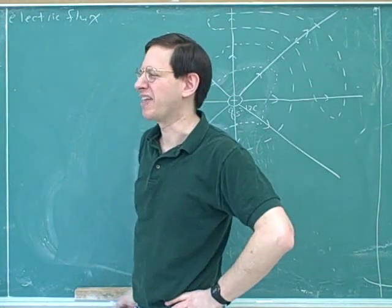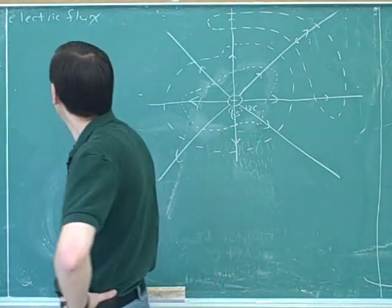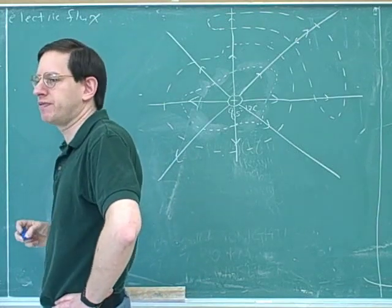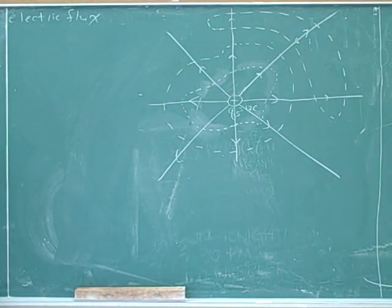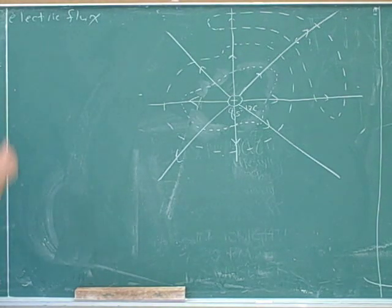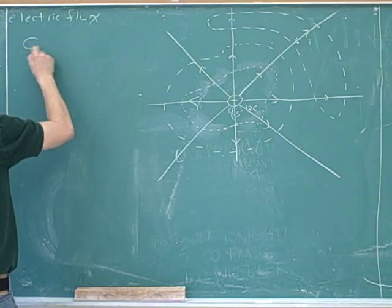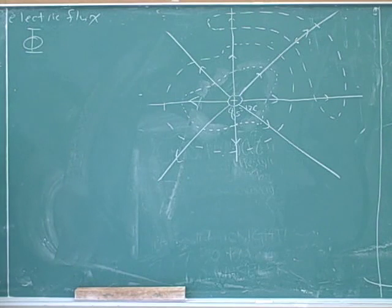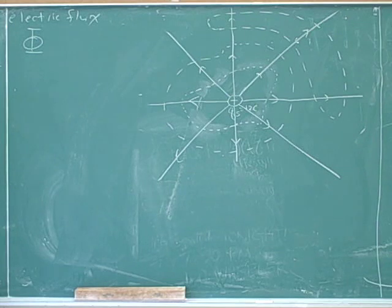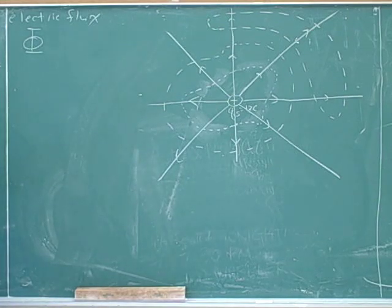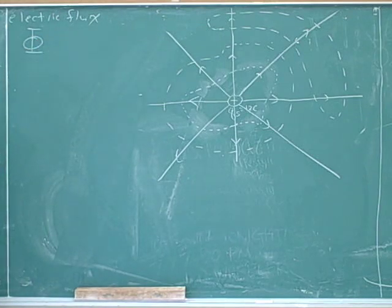So now we have a new concept — I think this is the only new concept we'll meet this week, actually. Electric flux, and we're building on the old concept of electric field. The symbol for electric flux is the Greek letter capital Phi. We can't use 'f' because that's being used for force, and we can't use 'e' because that's being used for field. Phi kind of sounds like the Greek letter for f, so here's the symbol.